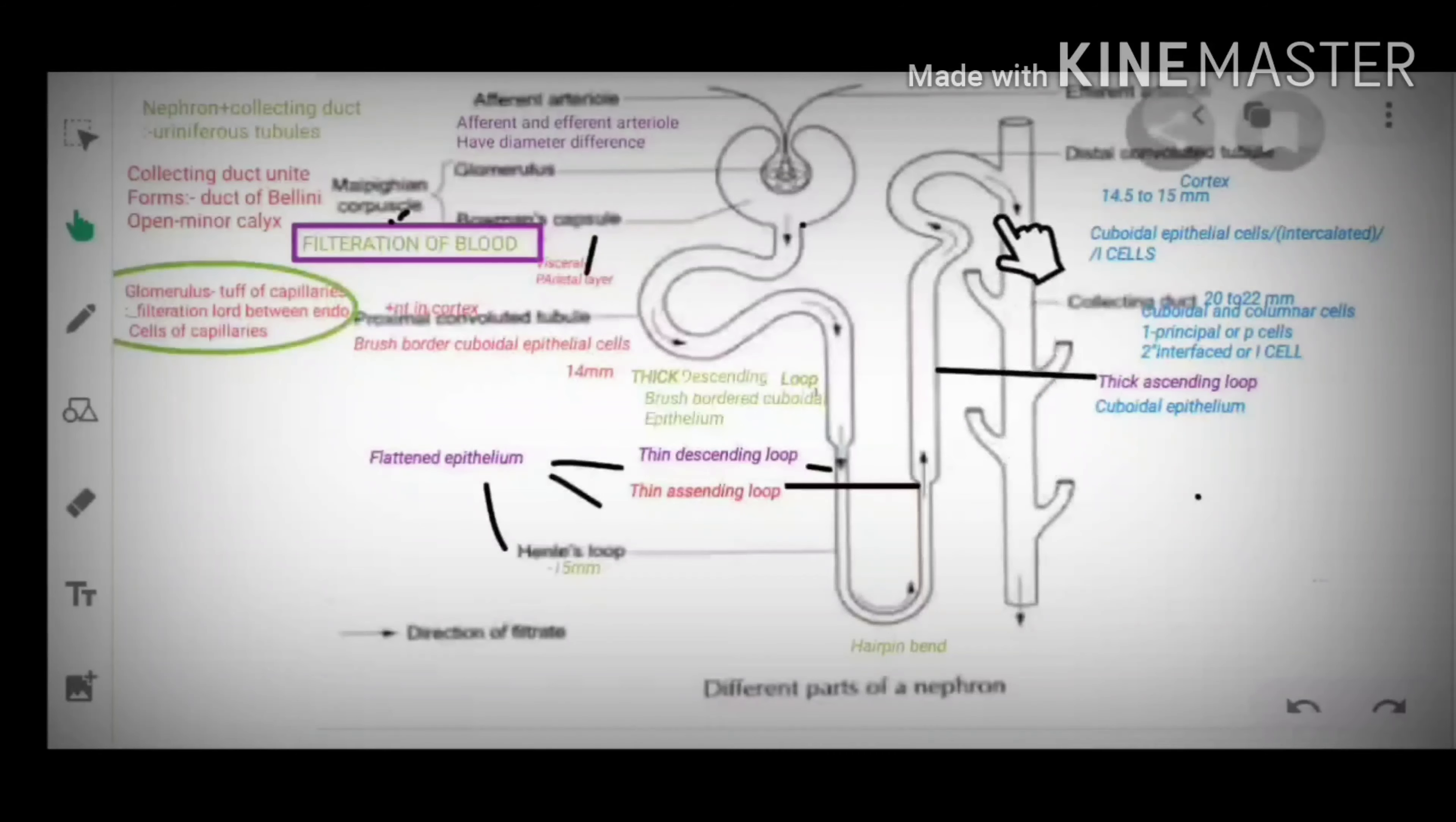And then collecting duct. Proximal convoluted tubule is present in the cortex and it has brush border cuboidal epithelial cells. It is 14 mm long.